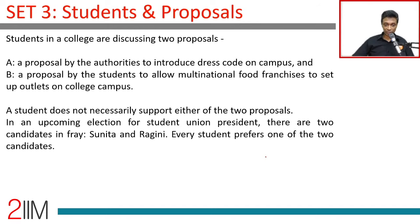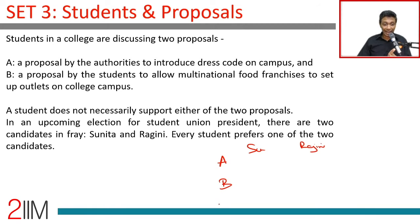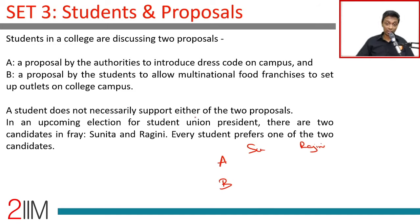There's a classification here that is very important to get the hang of. There is A and B, and then there is Sunita and Ragini. Between A and B, these are proposals, so I can imagine a student saying they're for proposal A and for proposal B, or saying they're not for either proposal. A student does not necessarily support either of the two proposals.